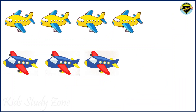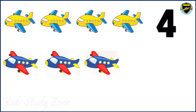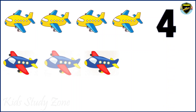Here we have some toy aeroplanes. There are some yellow aeroplanes and there are some blue aeroplanes. Let's find the total number of aeroplanes: 1, 2, 3, 4. So we have 4 yellow aeroplanes. Now let's count the blue aeroplanes: 1, 2, 3. We have 3 blue aeroplanes.